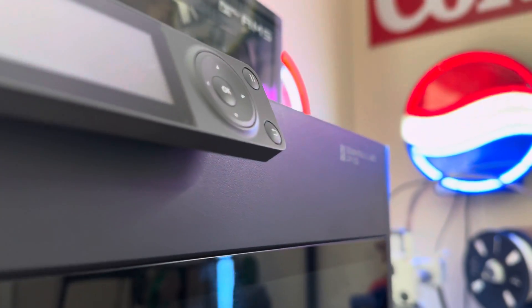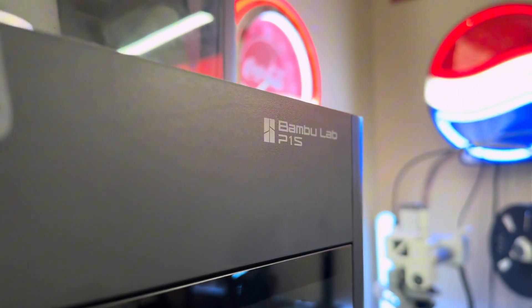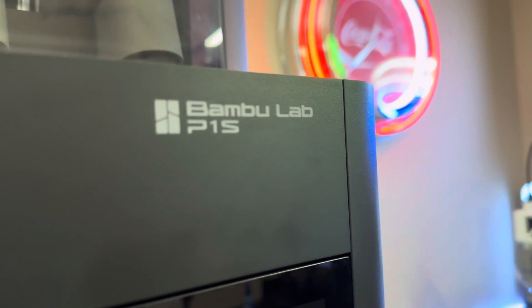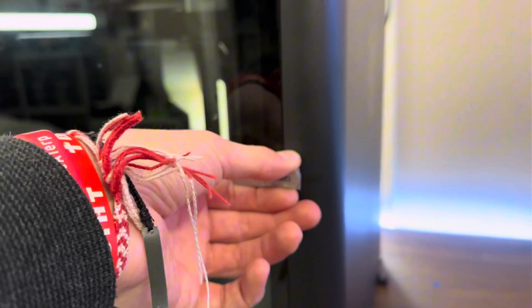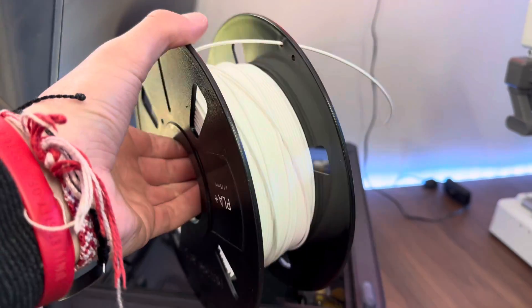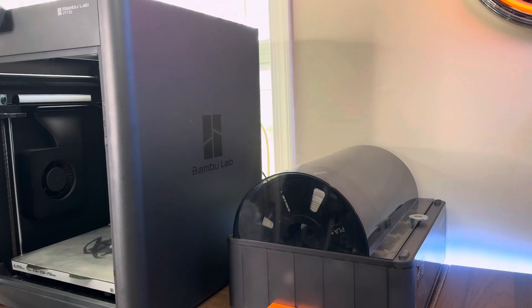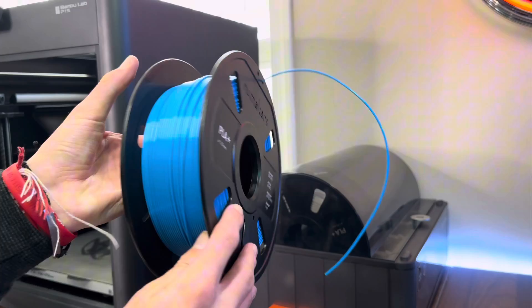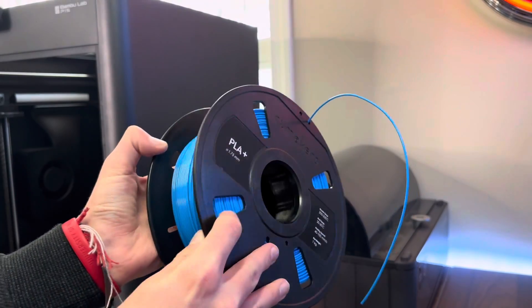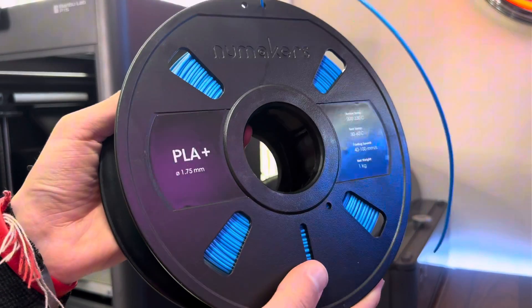So you just got your first 3D printer, and you're wondering where to go now. If you got your first 3D printer, you probably already know, but you need to use filament to 3D print with. This is a plastic material that comes on spools, and all of the models that you'll be making are made out of it. But where should you get your filament from, and what type of filament do you need?